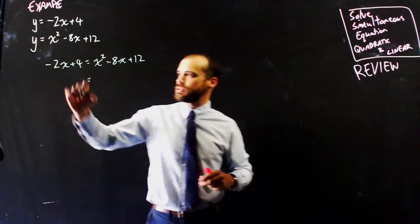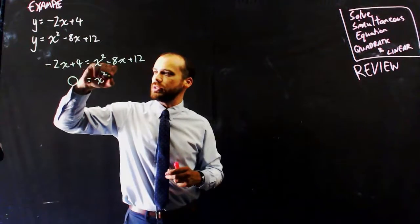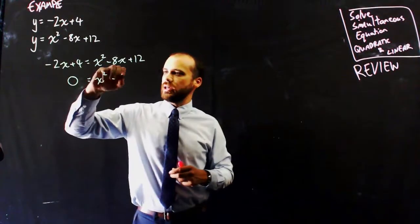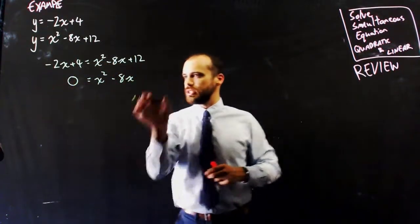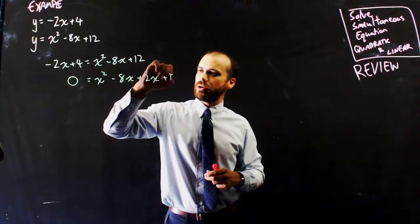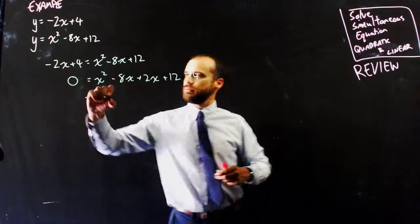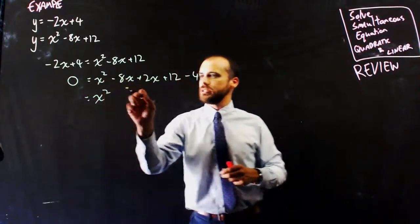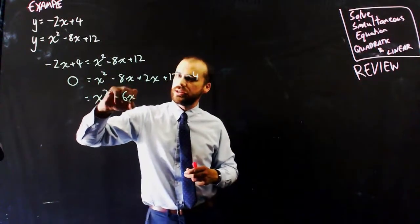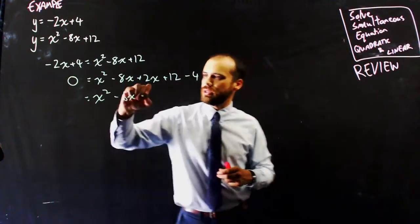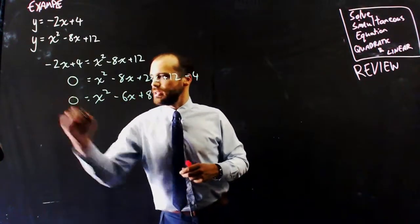If we move everything to one side, we're going to have 0 = x² - 8x, -2x over here becomes +2x, and positive 12, positive 4 over here becomes -4. Simplifying, we'll get 0 = x² - 6x + 8.